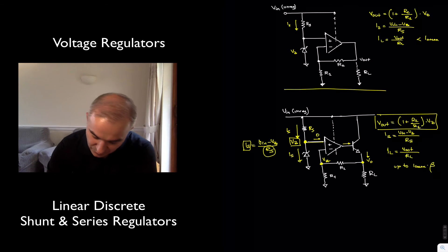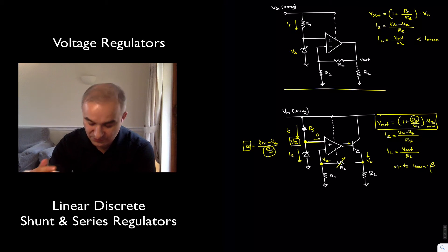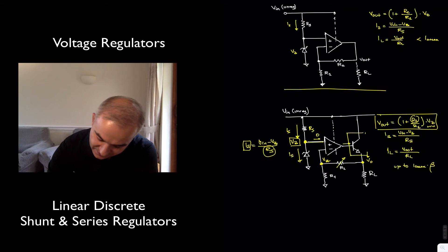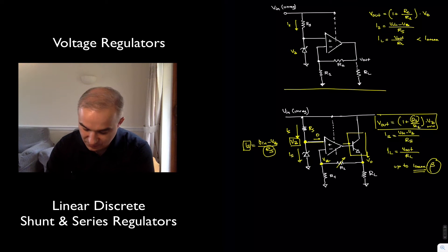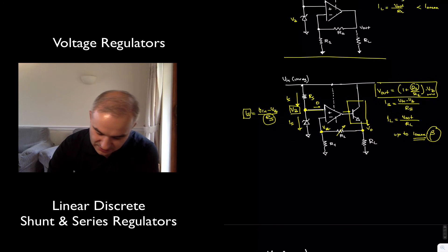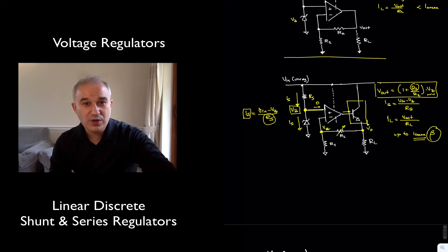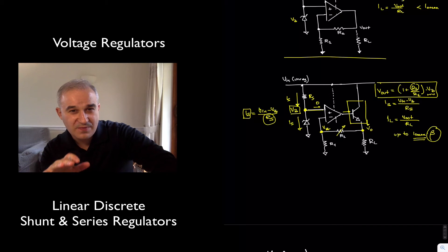That means we can control the output voltage. You can use a low-value zener, and by choosing R1 and R2 appropriately you can scale up the output voltage. By having the transistor here to amplify the current, the load current is the maximum current of the operational amplifier times beta. Let me now do the analysis slowly, using the same techniques from the operational amplifier analysis videos.